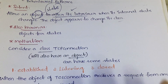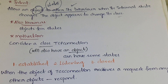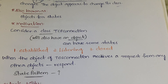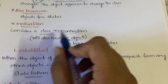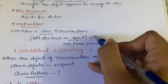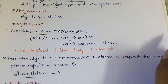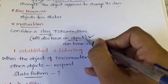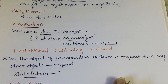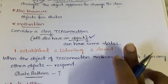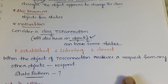Moving to motivation — in the motivation section we consider a class called TCPConnection. Every class has an object, and that object will have some states. For this TCPConnection object, we assume three states: Established, Listening, and Closed. These are the three states of the TCPConnection object.